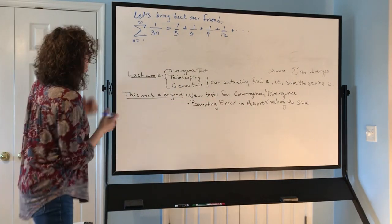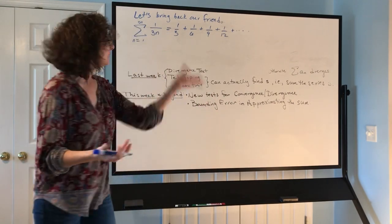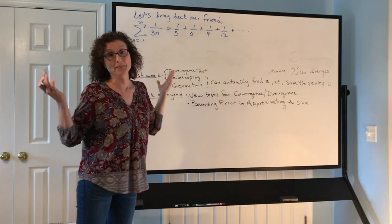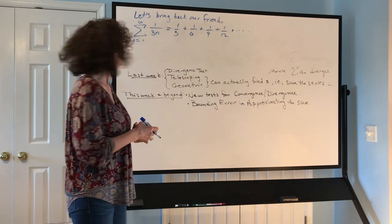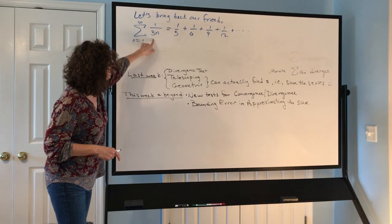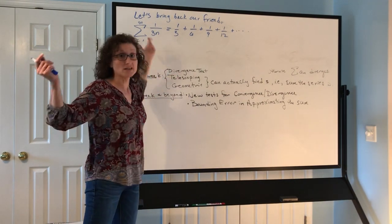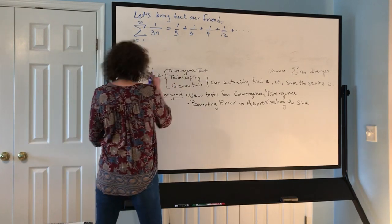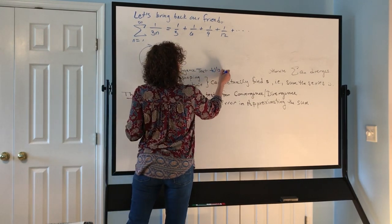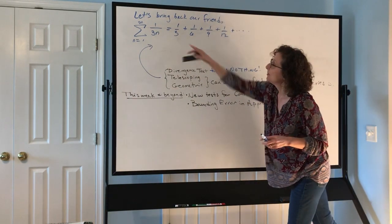Hopefully by now you've made some guess about whether adding 1/3 + 1/6 + 1/9 + 1/12 + 1/15 on forever will sum to something finite or diverge to something infinite. Does the divergence test help us? Absolutely not — the limit as n goes to infinity of a_n is 0, and when we get 0 from the divergence test, it tells us nothing.